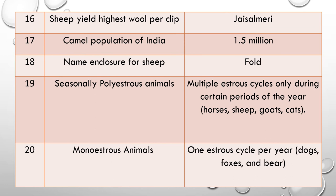Question 16: Which sheep yields the highest wool per clip or per shearing? The answer is the Jaisalmery sheep, which yields the highest wool per clip. Question 17: What is the camel population of India? The answer is 1.5 million camels in India.